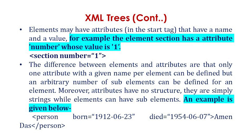The differences between elements and attributes are: only one attribute with a given name is allowed per element, but an arbitrary number of sub-elements can be defined for an element. Moreover, attributes have no structure — they are simply strings — while elements can have sub-elements. For example, a 'person' element has an attribute 'born', as in 'Amin Das is a person' shown in the example.